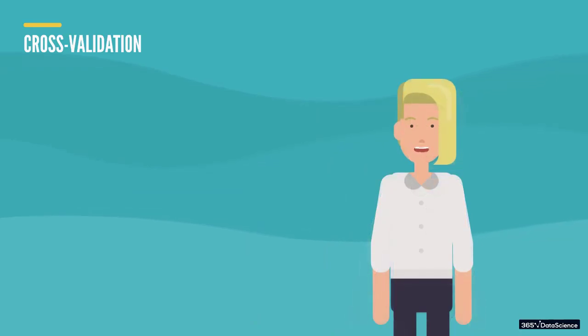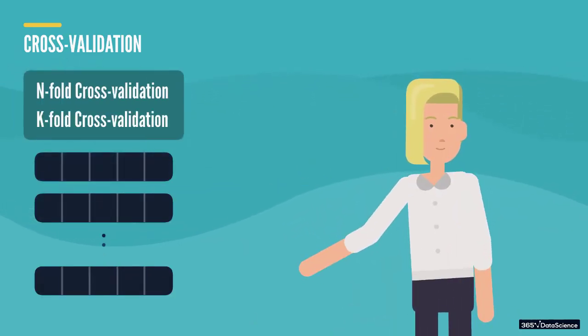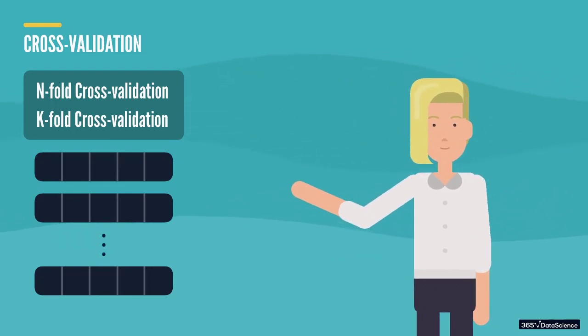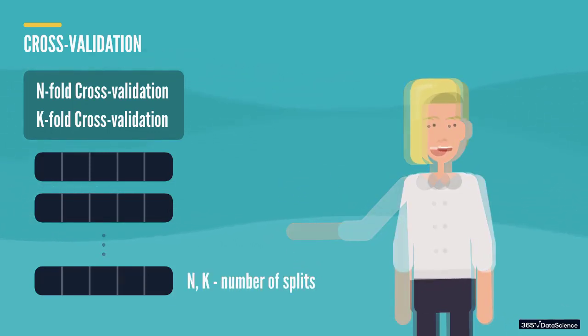The idea of cross-validation is based on splitting our data into n or k equal parts and then creating new variations of it. That's why you'll often see the term n-fold or k-fold cross-validation. n and k show us into how many parts we've split our data. Okay, let's see exactly how this works.